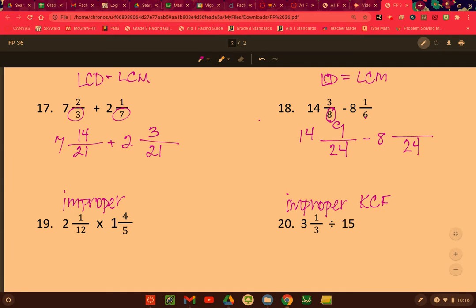So 8 times 3 is 24. 3 times 3 is 9. And 6 times 4 is 24. 1 times 4 is 4. Now you finish.